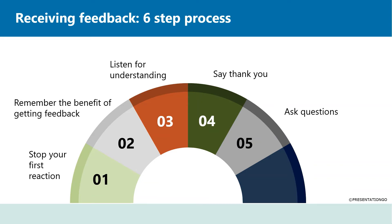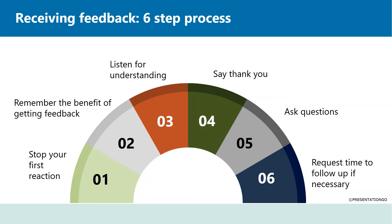Step 5: Ask questions. In order to truly understand your supervisor's point, it's often helpful to ask questions as this will prompt them to elaborate further. Step 6: Request time to follow up. If you receive your feedback before you submit your project, there may be a chance for a further conversation with your supervisor after you have had time to implement the changes, if your research project allows. This will give you a chance to get on the same page with your supervisor and see whether you understood what they mean.